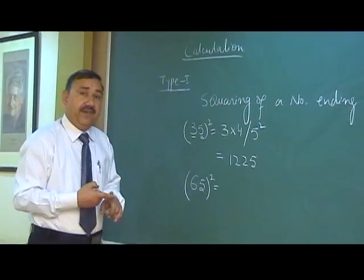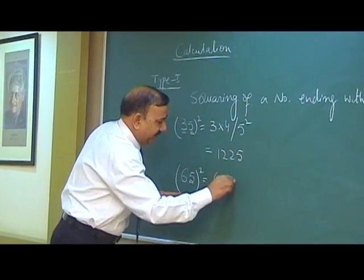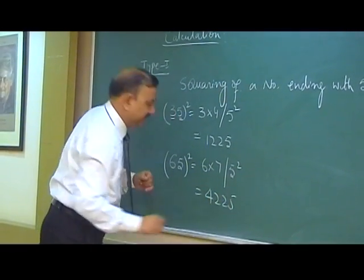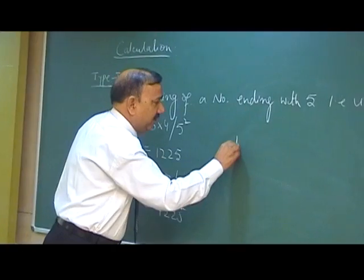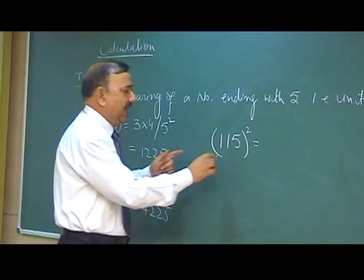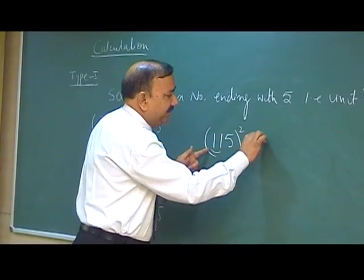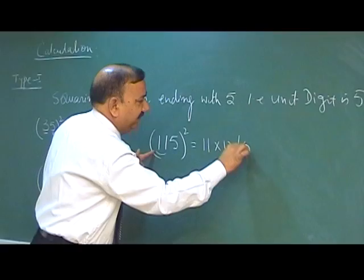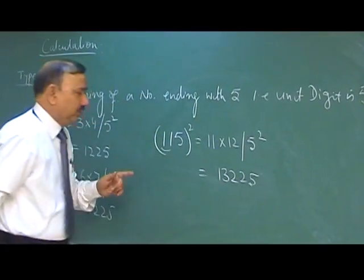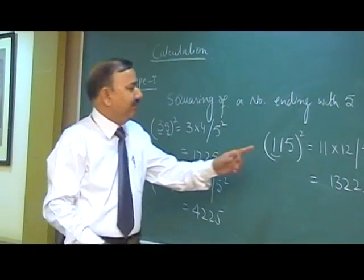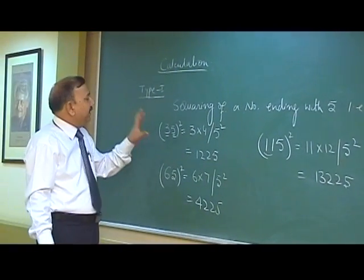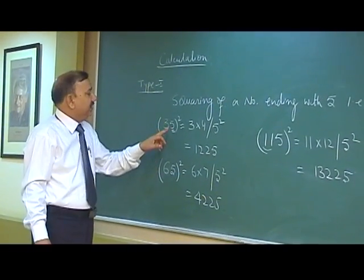Same way, let us take 65 squared. We can get the answer very quickly: 6 multiplied by 7 is 42, and 5 squared is 25, so the answer is 4225. Similarly, for a 3-digit number, 115 squared: we multiply 11 by 12 to get 132, and append 25, giving 13225. This method is applicable to all numbers ending with 5 as the unit digit — it is the fastest way to calculate the square of any 2-digit or 3-digit number ending in 5.